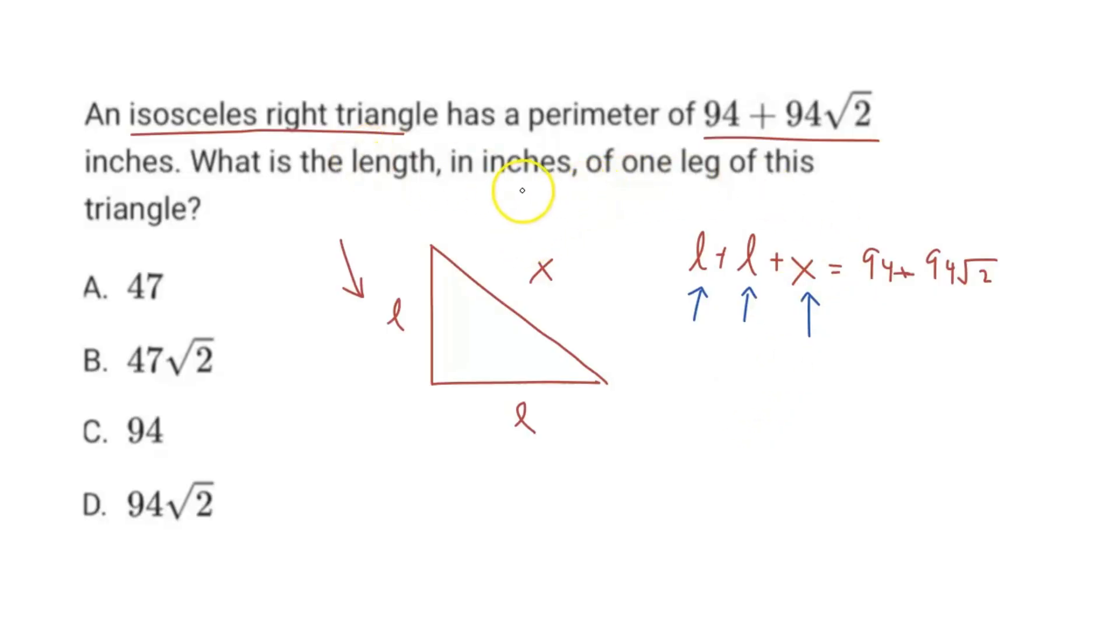So how do we do that? We would have to use the Pythagorean theorem. We know that in a right triangle, because this is an isosceles right triangle, a² + b² = c². So in this case, L² + L² must equal X².